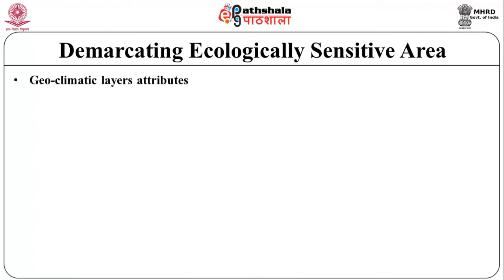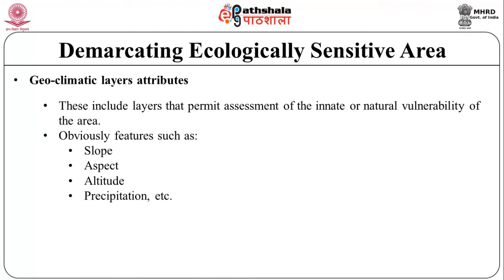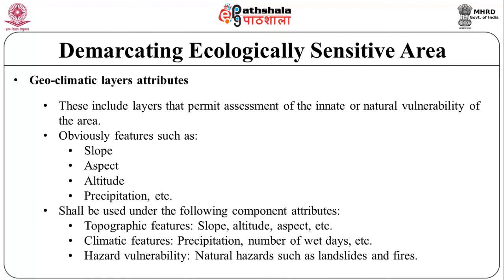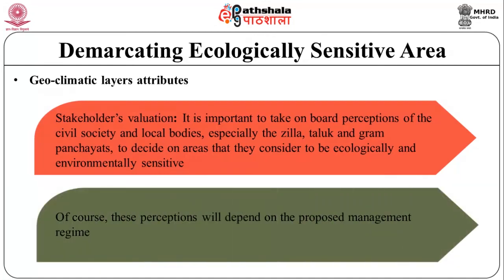The geoclimatic layers of attributes include layers that permit assessment of the innate or natural vulnerability of an area. Features such as slope, aspect, altitude and precipitation shall be used under the following component attributes: topographic features including slope, altitude and aspect; climatic features including precipitation and number of wet days. Hazard vulnerability is also an important aspect, as natural hazards such as landslides and fires cannot be excluded. Stakeholder valuation refers to the importance placed by both civil society and local bodies — especially the Zilla, Taluka and Gram Panchayat — in deciding on areas they consider ecologically and environmentally sensitive. These perceptions will depend on the proposed management regime as well.